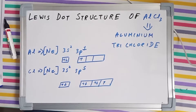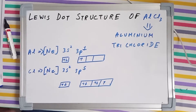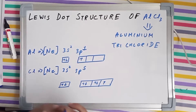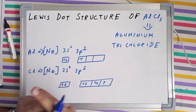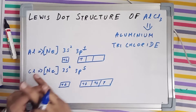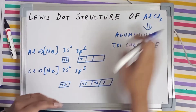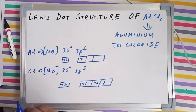Namaste everyone. Today we will be drawing the Lewis dot structure of AlCl₃, which is aluminium trichloride. In order to draw the structure, we need to find the valence electrons of the different atoms present in this molecule, which are respectively aluminium and chlorine.